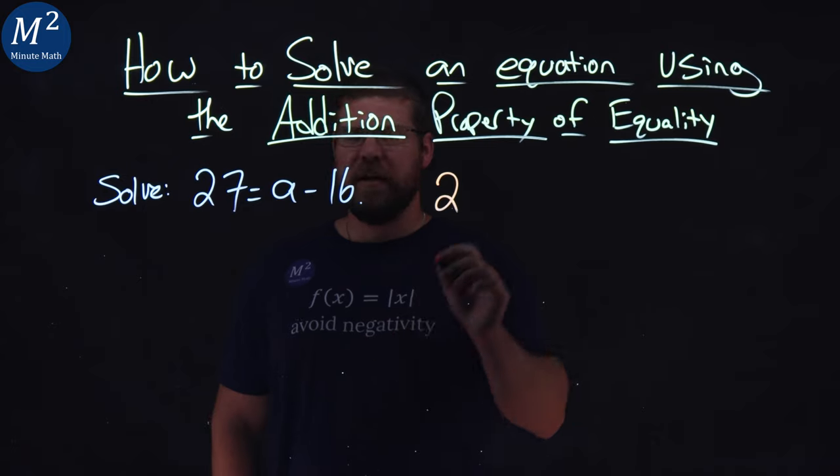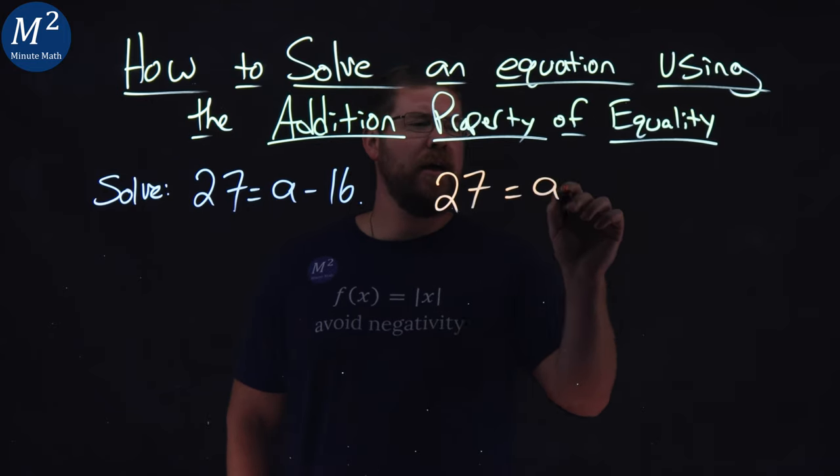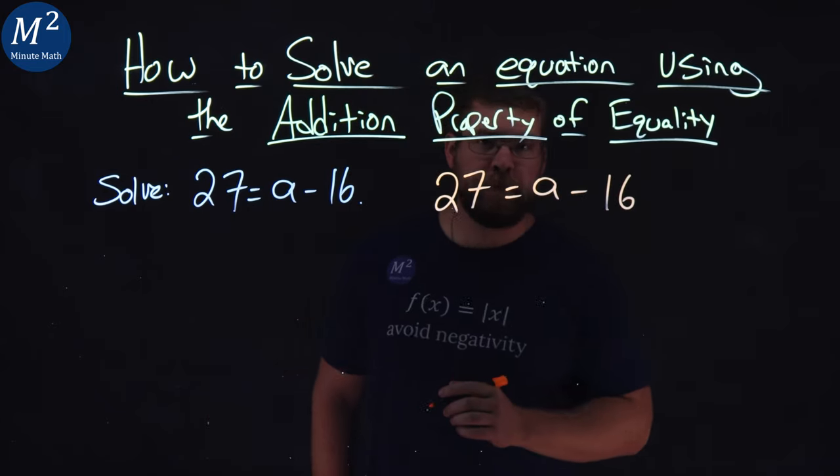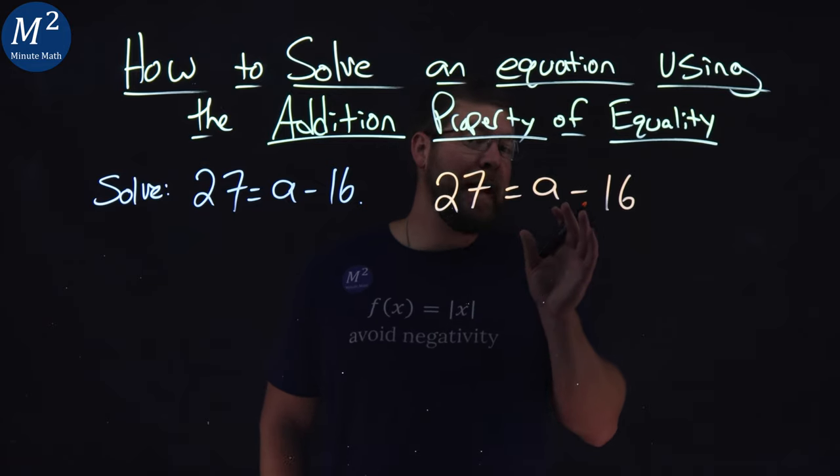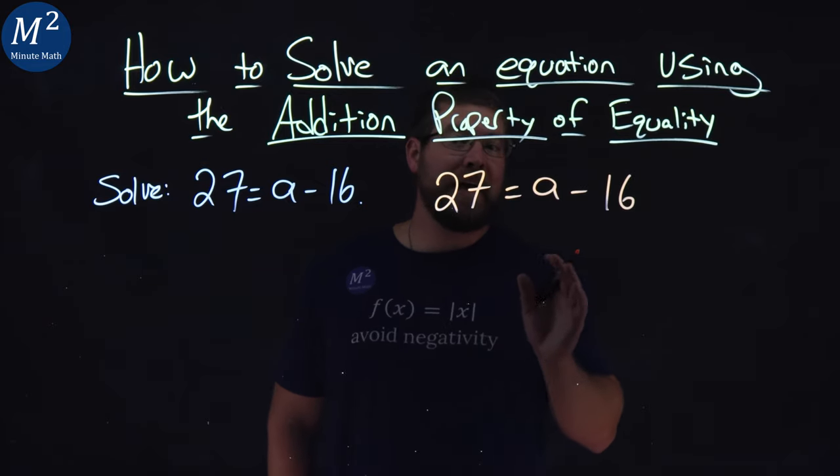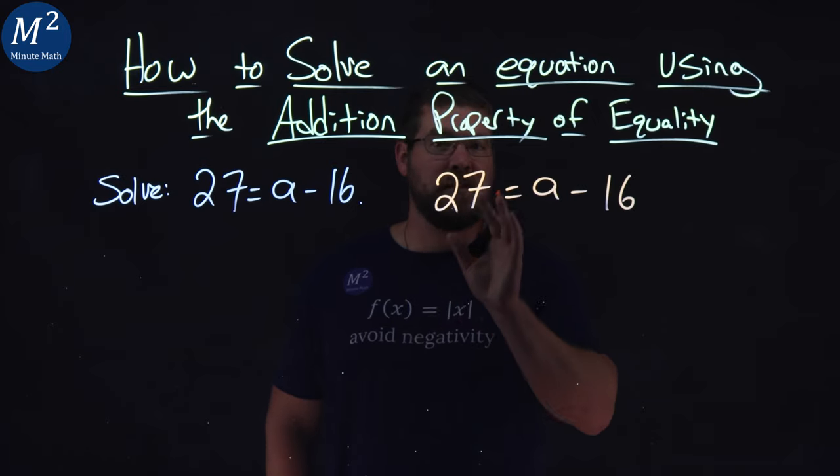First, let's rewrite our equation: 27 equals a minus 16. Well, the addition property of equality tells me that whatever I add to one side of the equation, I need to add to the other to make it equal.